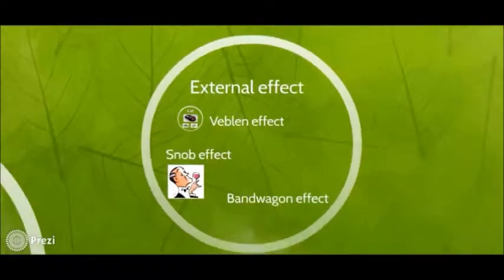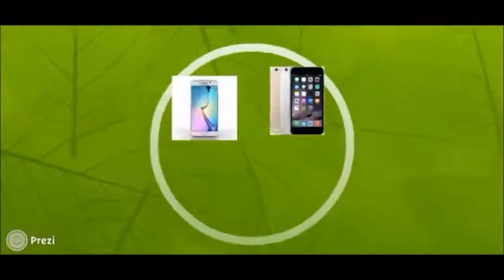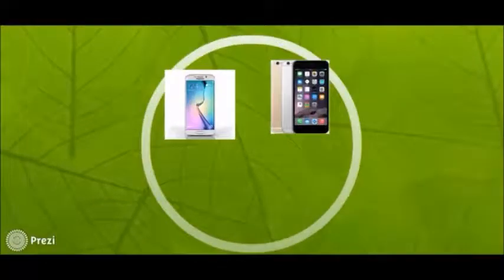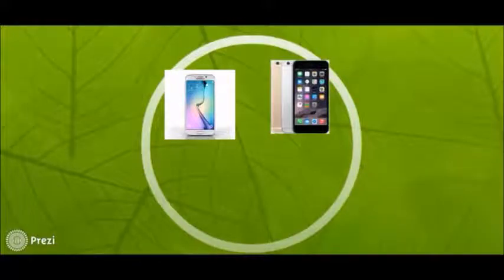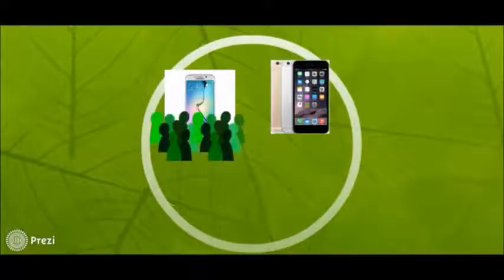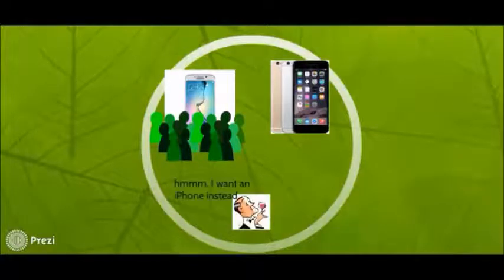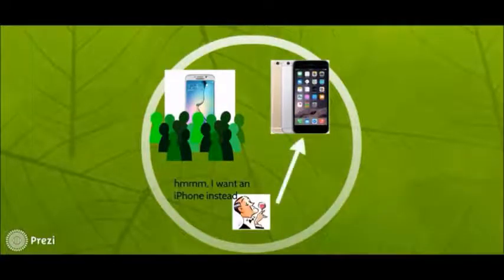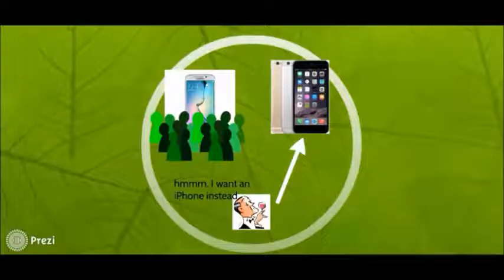Let's talk about the snob effect. Snob effect refers to when a consumer prefers exclusive goods by decreasing his demand for the fact that others are also consuming the same commodity. This behavior represents the desire to be different and to be disassociated with the common herd. Although it may seem similar to the Veblen effect, it is different since Veblen effect is a function of price, while snob effect is a function of the consumption of others.